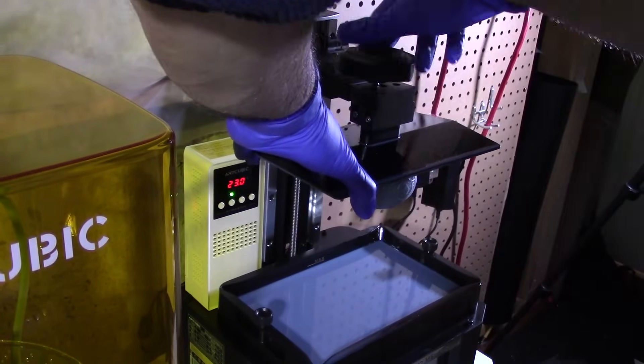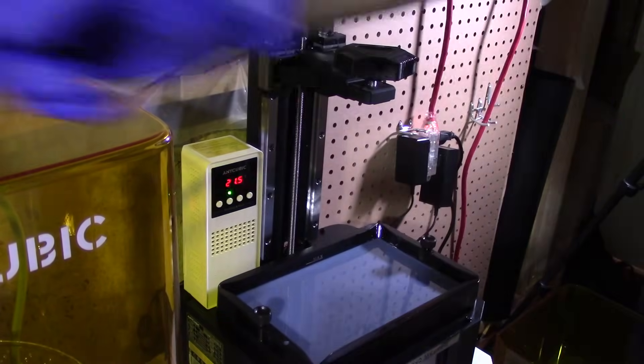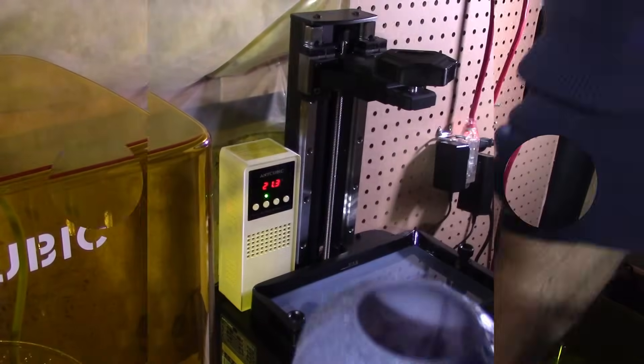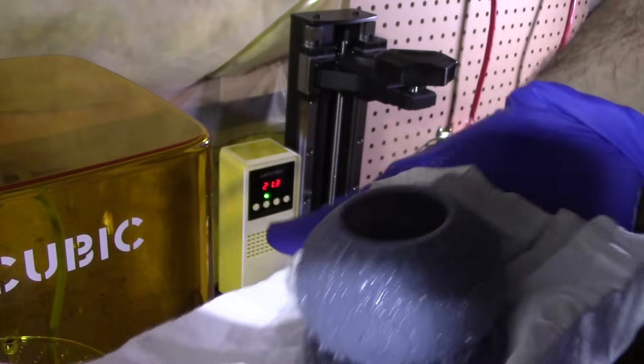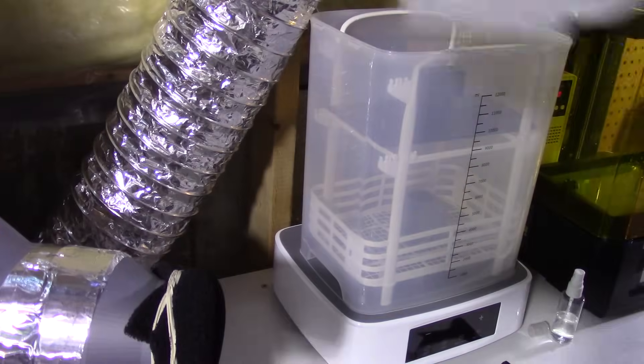Once the print is done, remove the bed. Spray ISO on the bed. Do this away from the resin vat. Slowly and gently scrape away the print off the bed. At this point, you can remove the supports any way you like, wash the print first, and remove the prints after.